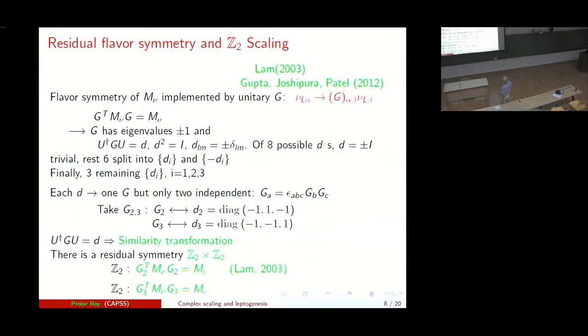However, one very interesting dynamical feature of this thing is the concept of Z2 scaling. See for a complex symmetric neutrino matrix mass matrix M_nu, if you have a flavor symmetry G then you have this kind of relation and Lam first pointed out in 2003 which is elaborated by Gupta, Joshipura and Patel in 2012 that immediately you have the result that U dagger G U is D where D squared is 1. There are eight possibilities and of which, there are eight possibilities and they split into two sets so we've got clearly one independent set and then again there's a relationship between G_A and G_B, G_C so you have basically two sets.